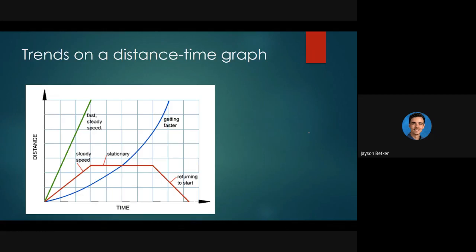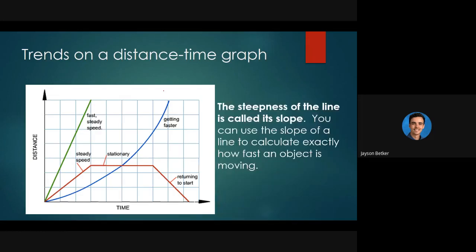Let's look at a few different examples. A fast steady speed shows a straight diagonal line at a high slope — it's steep. An object that is getting faster — we call that accelerating. Then a steady speed shows a straight line at a moderate slope. If each second passes and the distance isn't changing, the object is not moving. And if the line slopes back toward zero, the object is returning to the start.